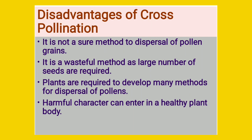The third disadvantage is that plants are required to develop many methods for dispersal of pollen grains, and many agencies are required. For the dispersal of pollen grains the agencies have to get attracted, and therefore the flowers need to ornament themselves — meaning again more energy is lost in cross pollination. The fourth disadvantage is that harmful characters can also be added into a healthy plant body.